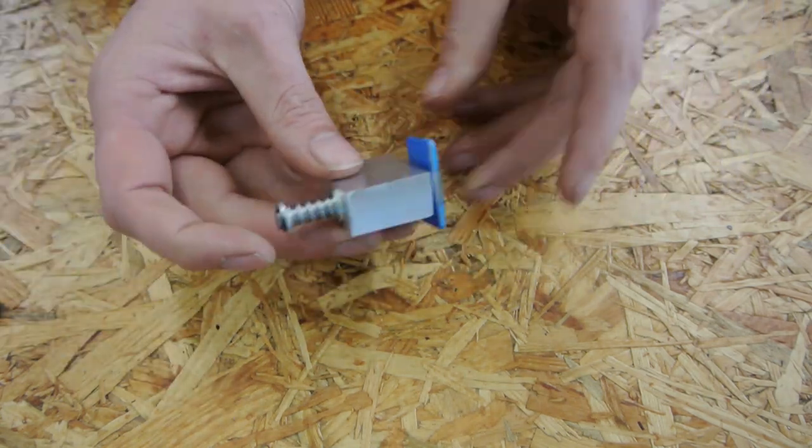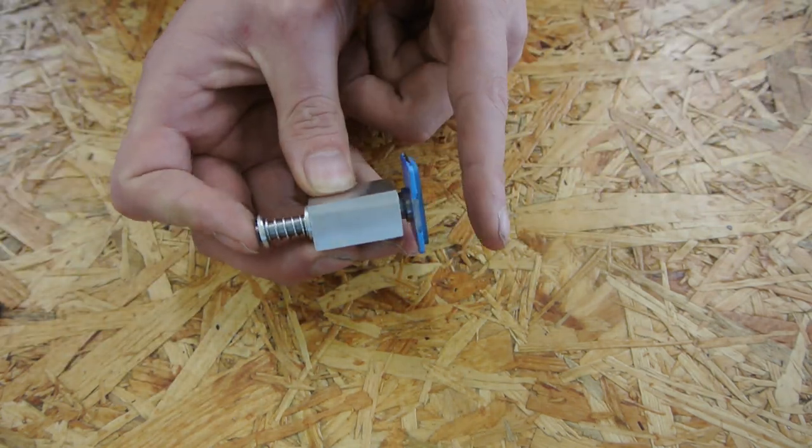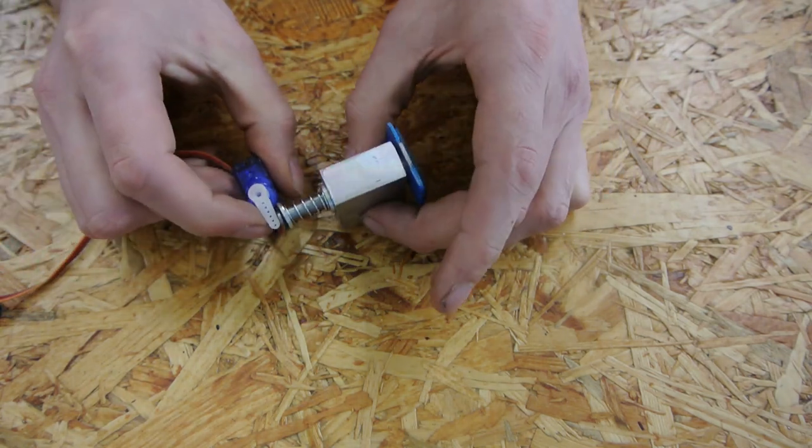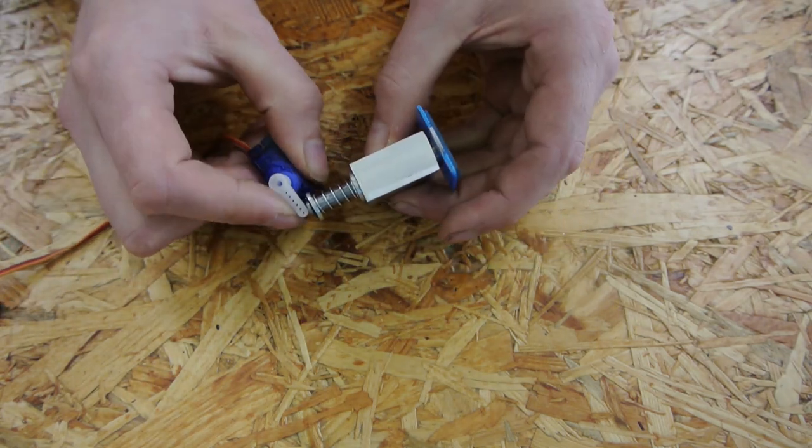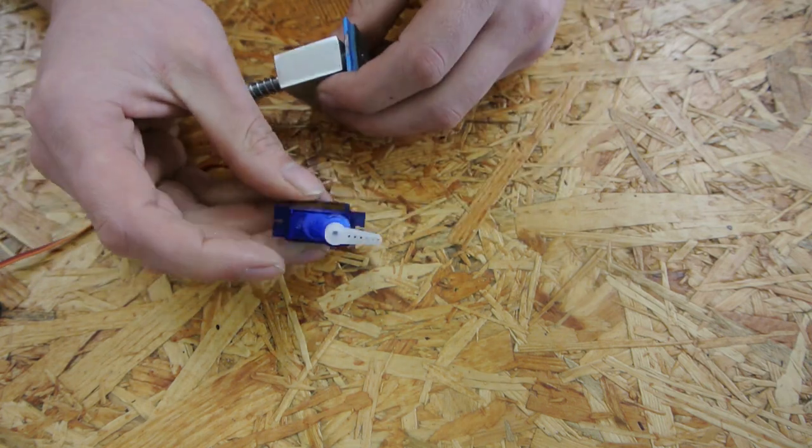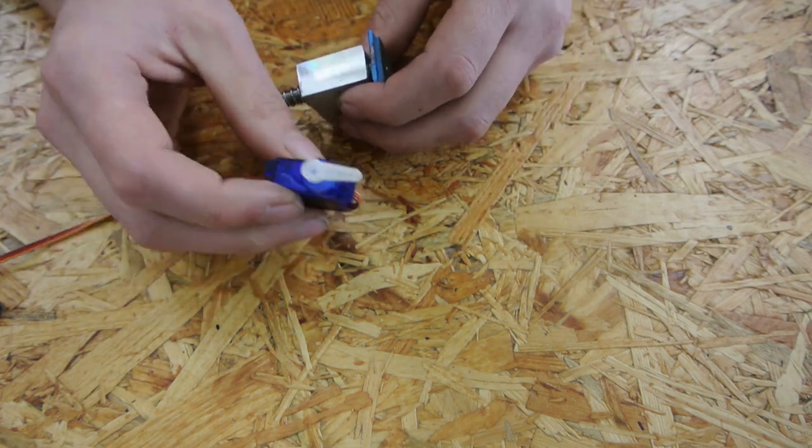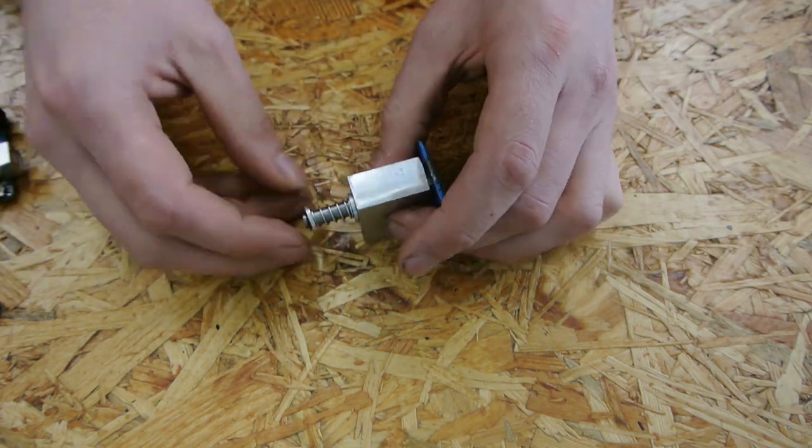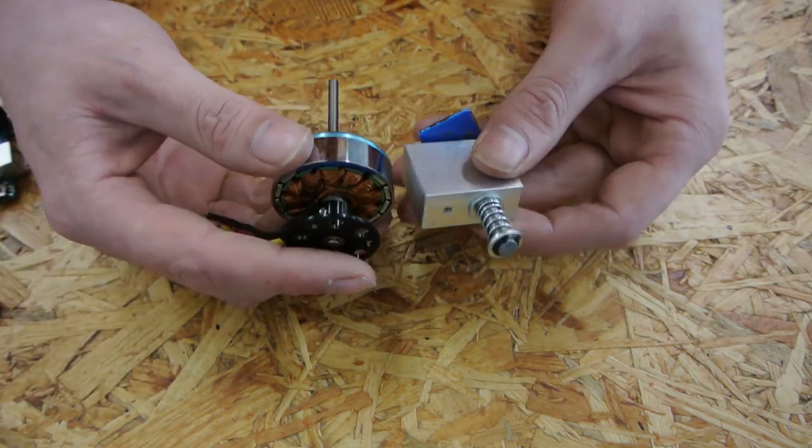So this is the main mechanical part of the brake. The blue part is a brake pad from a bicycle disc brake. And a small servo motor is gonna push the brake pad against the flywheel. Up next I'm gonna make a bracket to connect the brake to the motor.